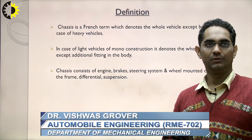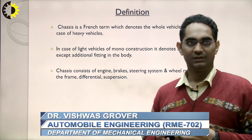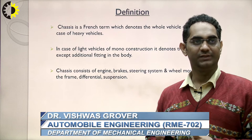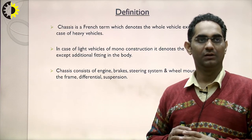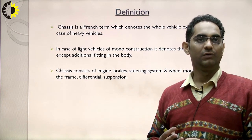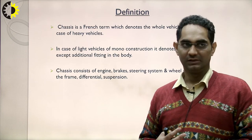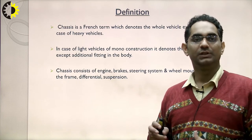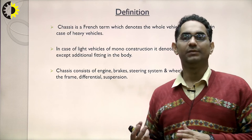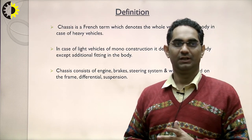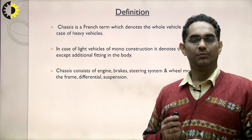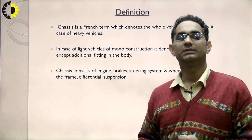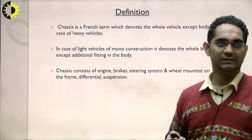First we will define what is the chassis. Chassis is a French term which denotes the whole vehicle except the body in the case of heavy vehicles. In case of light vehicles of mono construction, it denotes the whole body except the additional fittings. Chassis consists of the engine, brakes, steering system, wheels mounted on the frame, differential, and suspension.